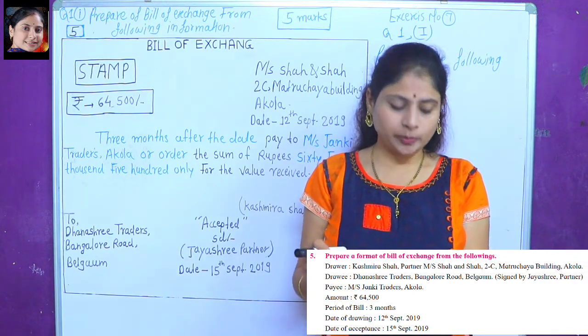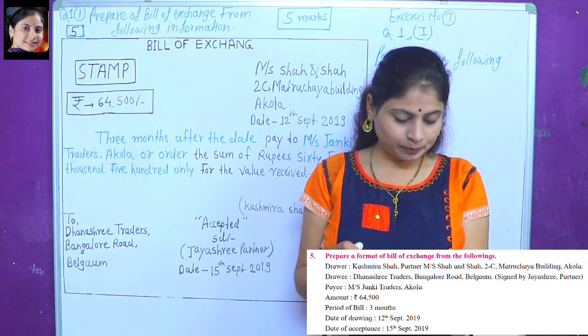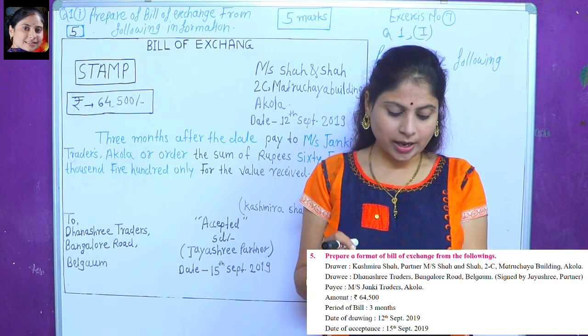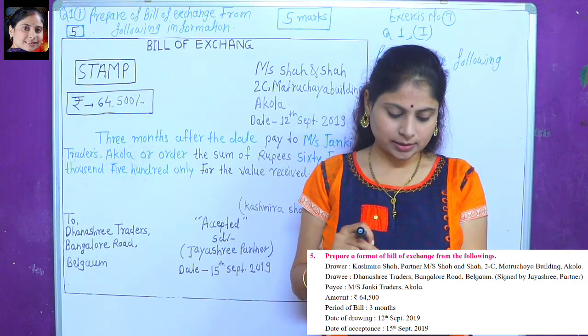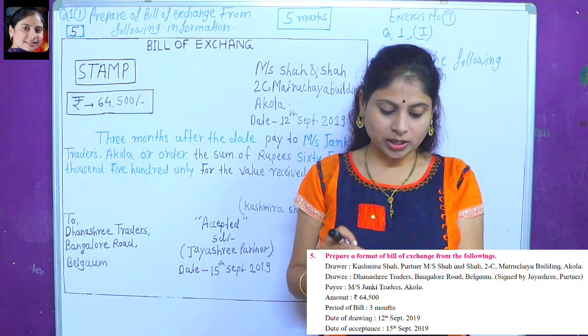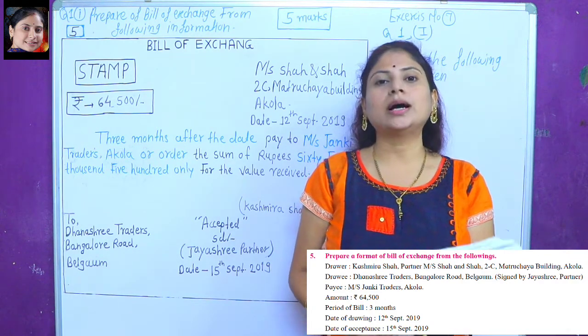Drawer: Kashmir Shah, Partner, Mrs. Shah and Shah. Address: 2C, Matruchaya Building, Acola.